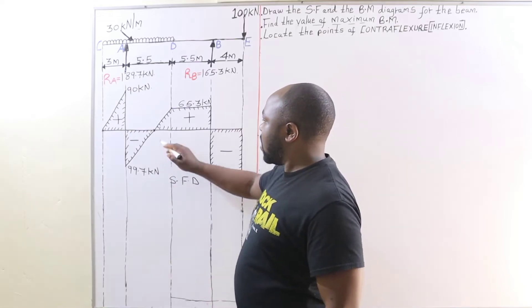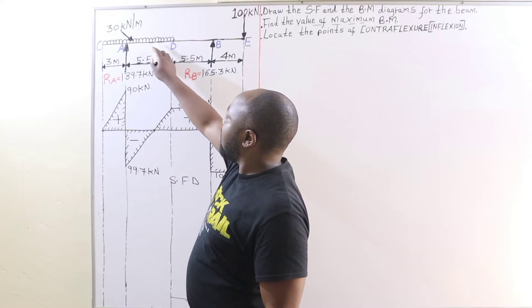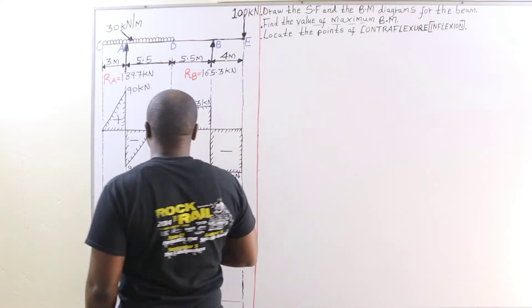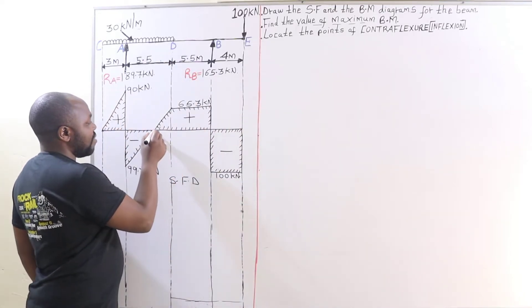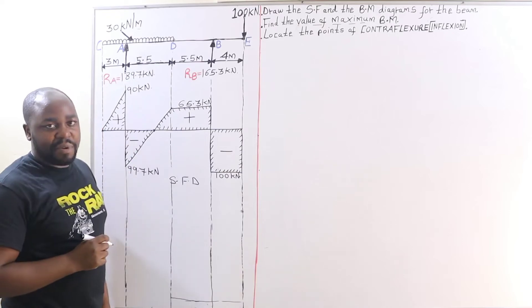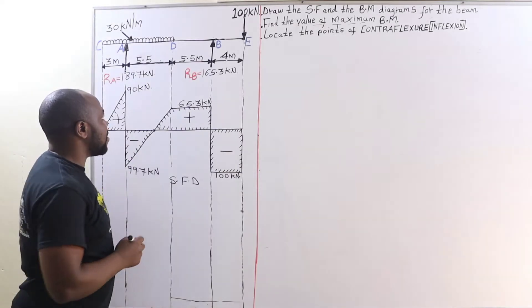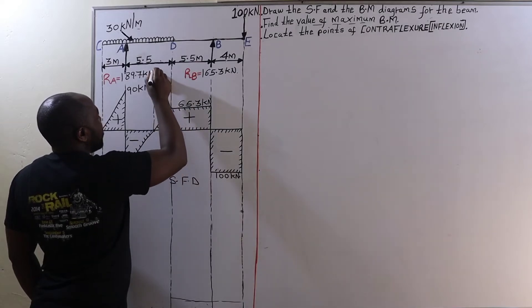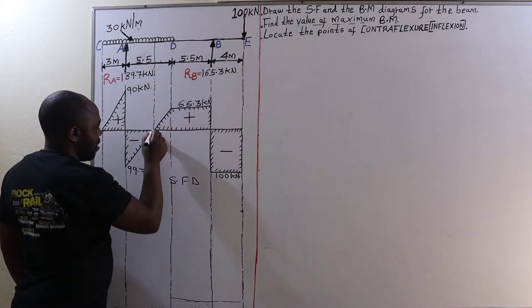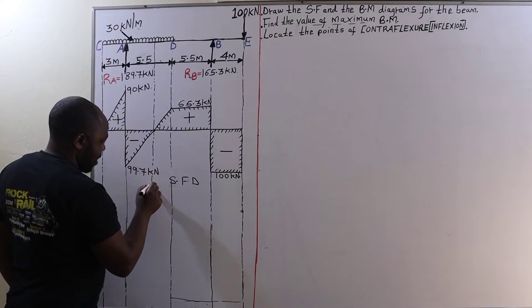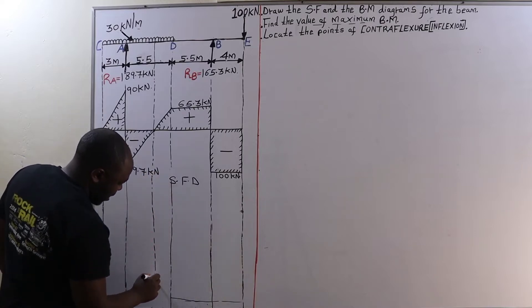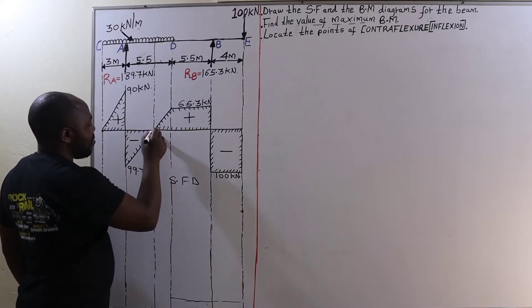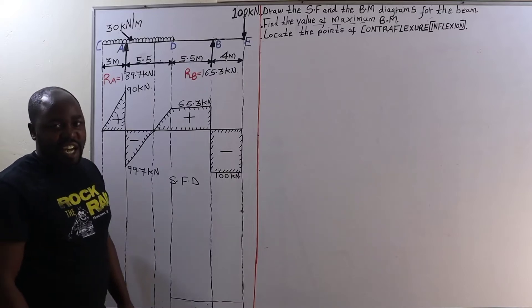So if we locate this point on our loaded beam, we are going to drop a line passing through this point of zero shear force. And this is going to be dropped like this. So this is a line that is passing through zero shear force.